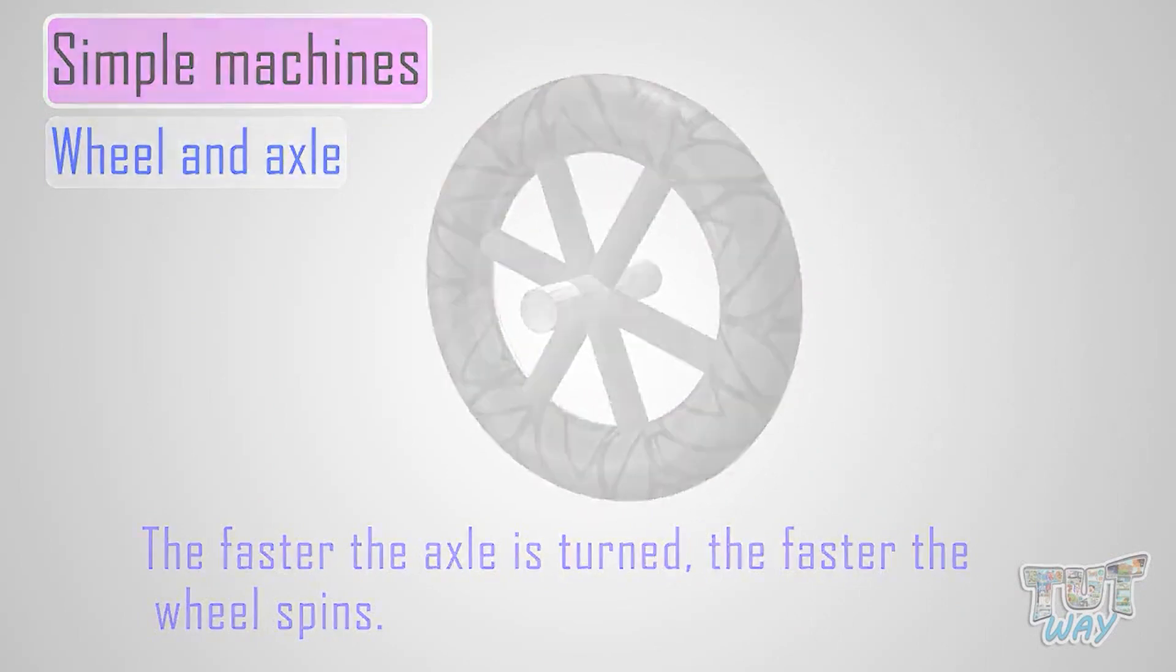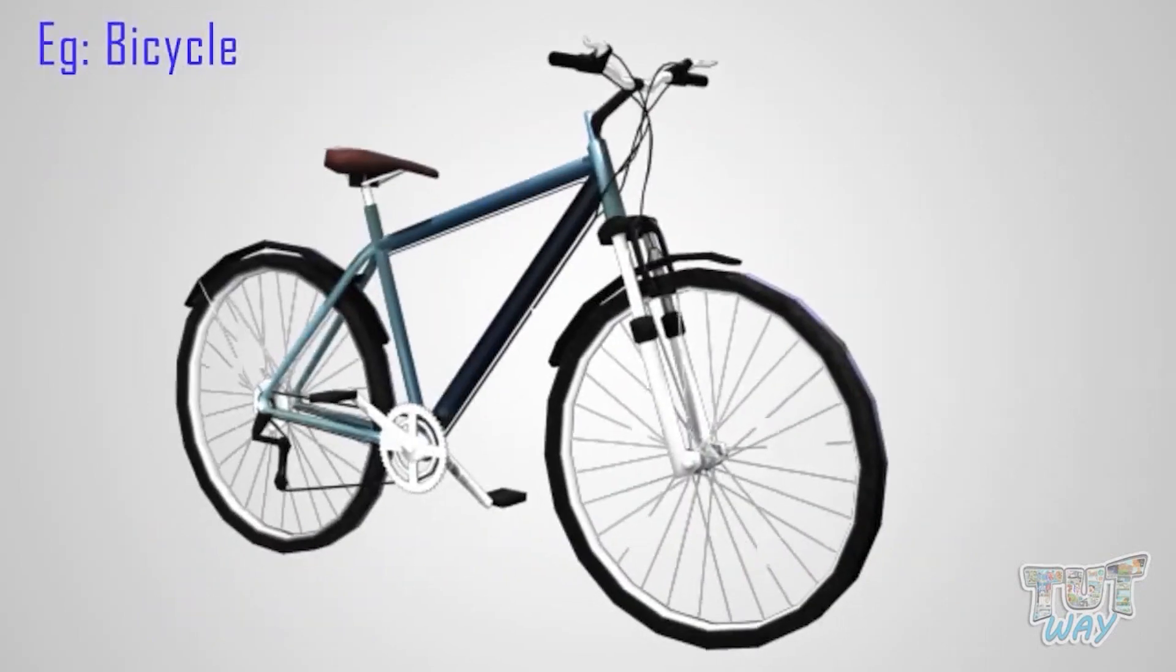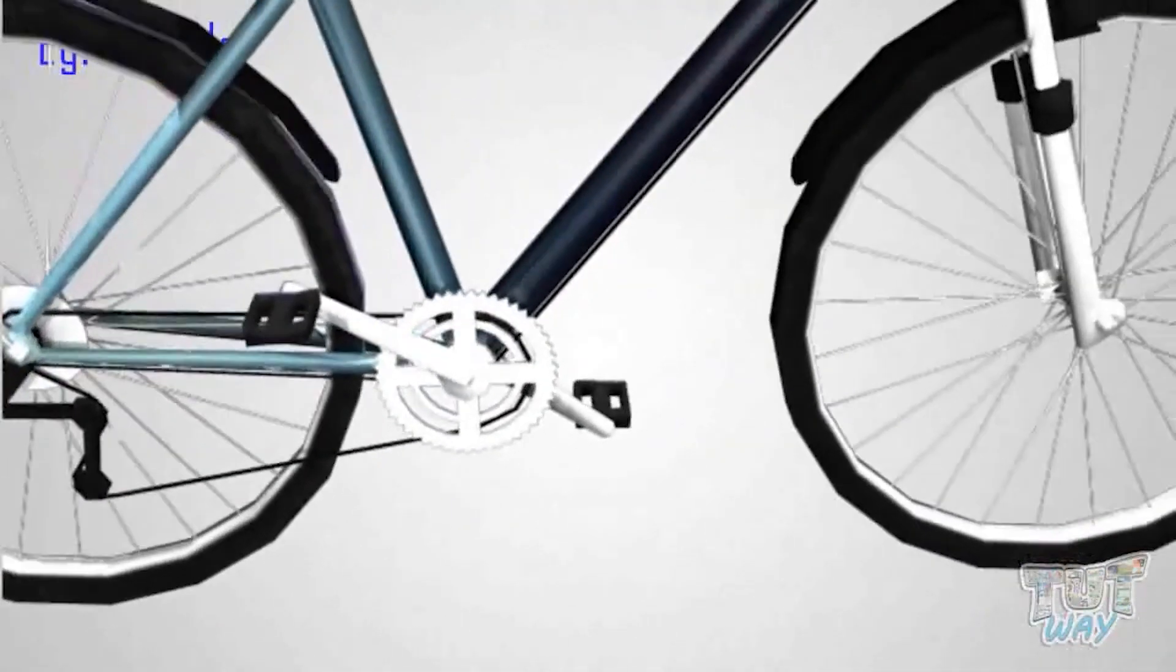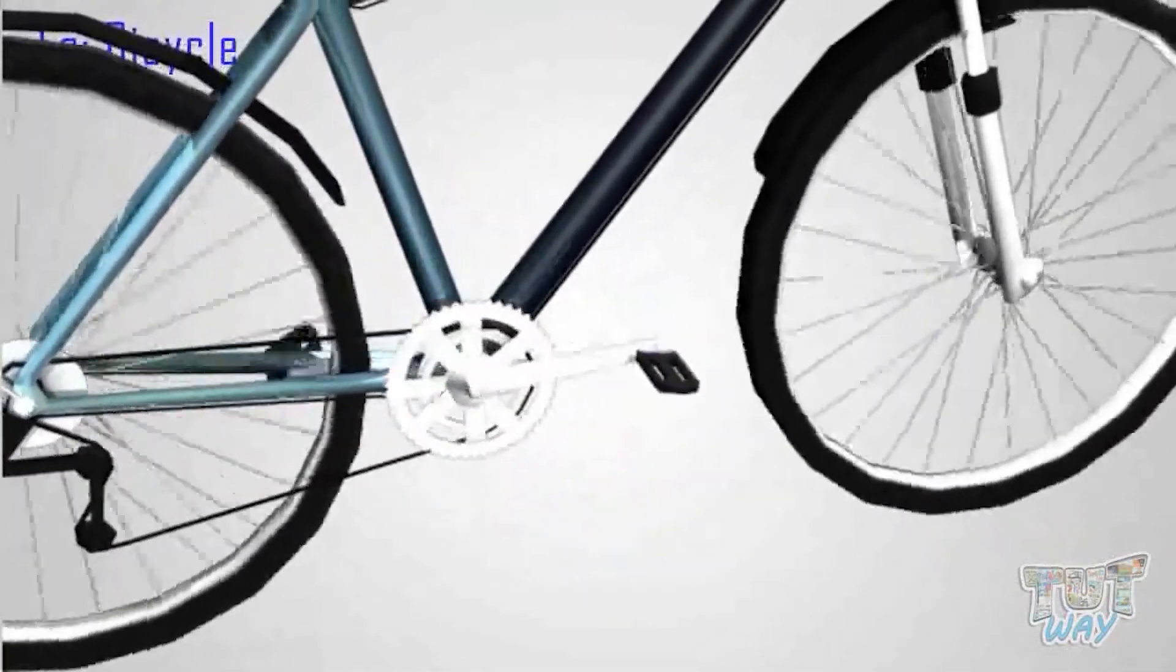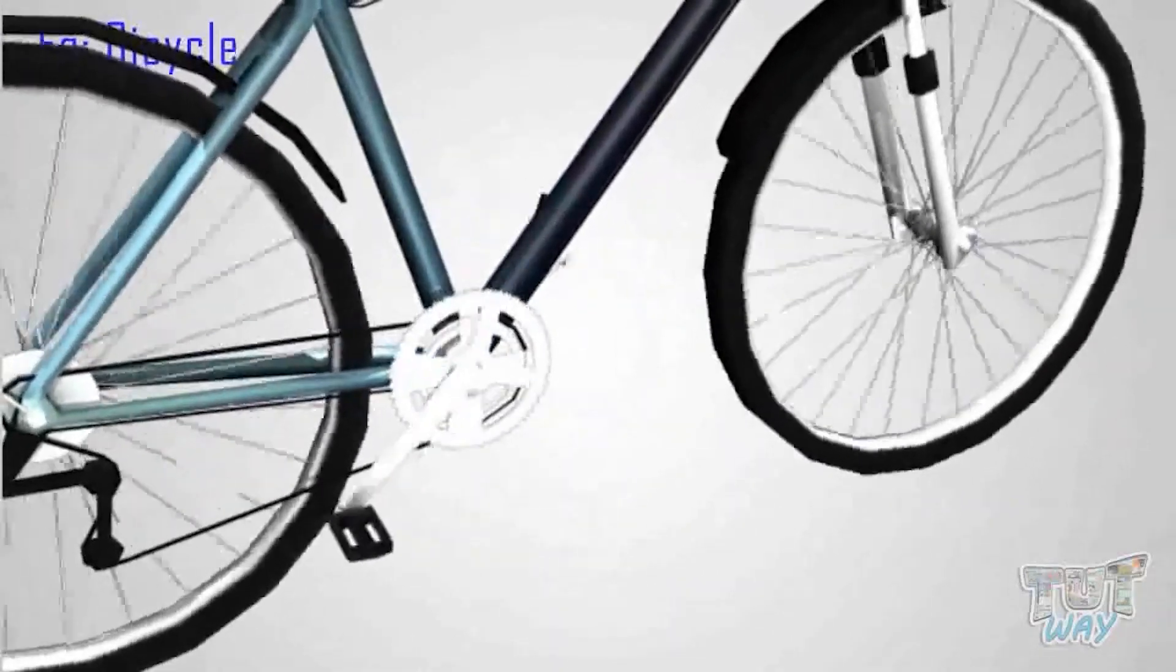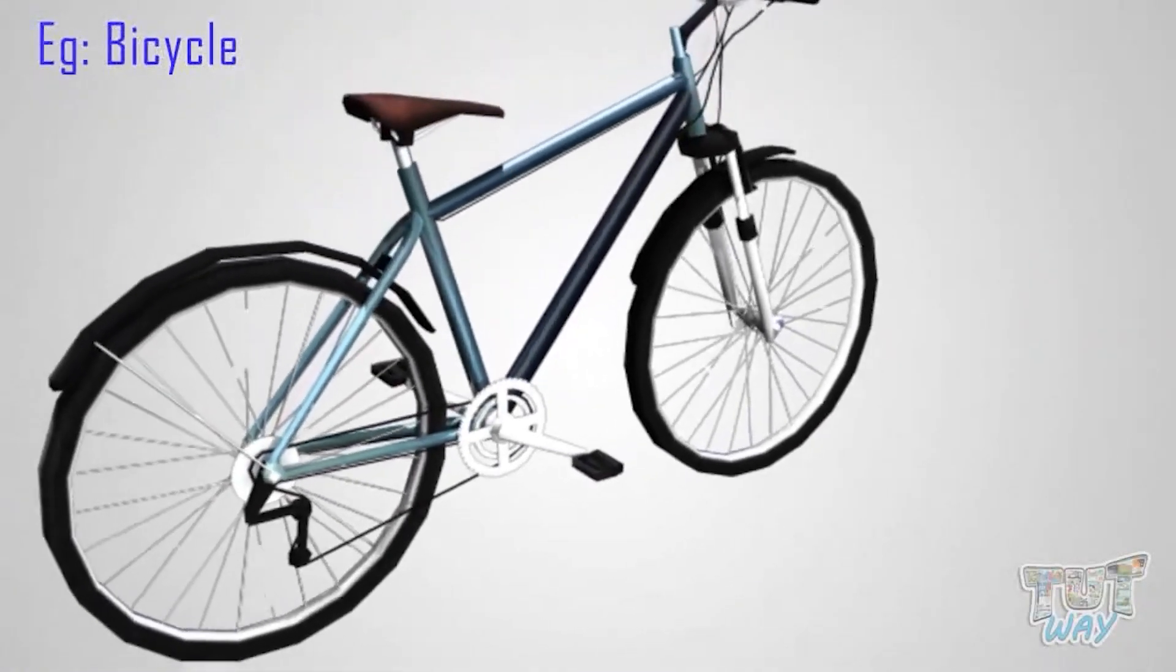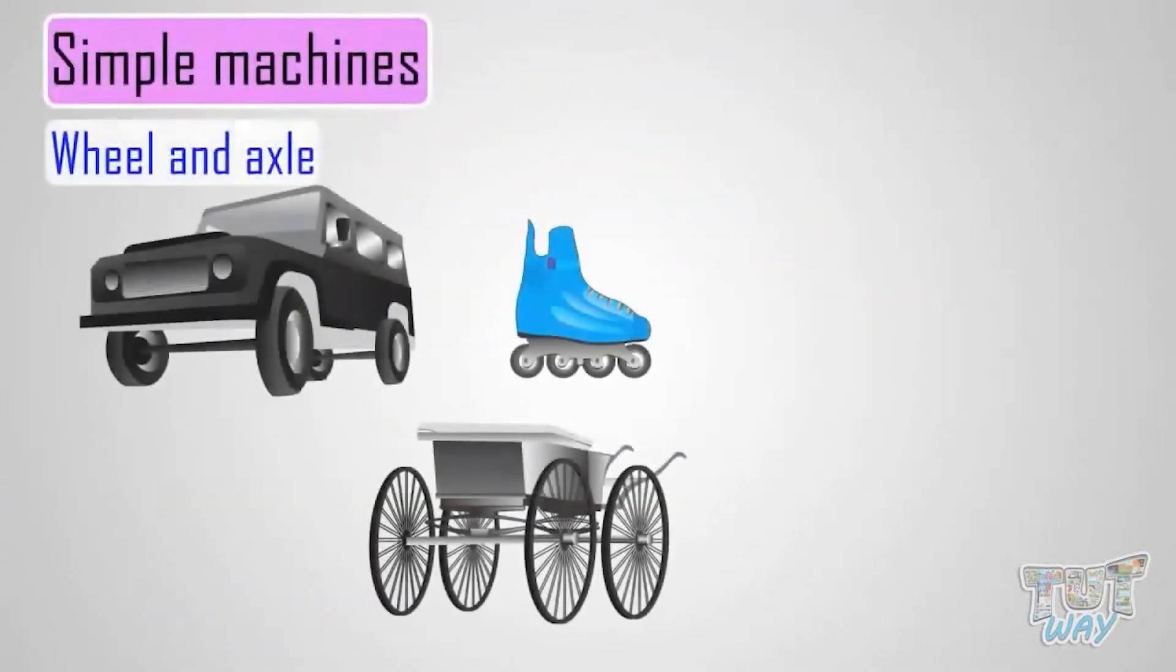Examples? Bicycle. Bicycle wheels are attached to the axle and we move the axle with pedals. And the faster we move the axle, the faster the wheels move or the cycle moves in every vehicle.